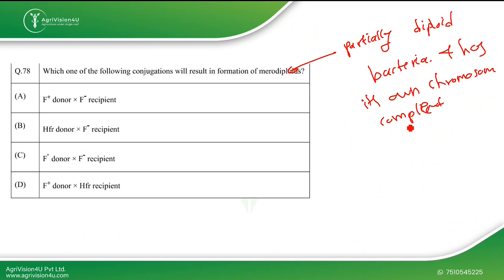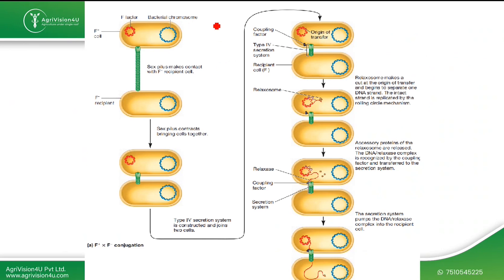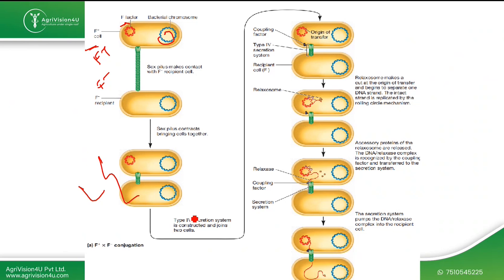In conjugation, the F⁺ donor makes contact with the F⁻ recipient via the sex pilus. A type IV secretion system joins the two cells and a conjugation bridge forms. Genetic material is transferred from the donor to the F⁻ recipient cell, which then becomes F⁺.